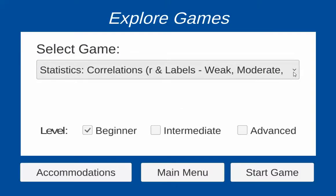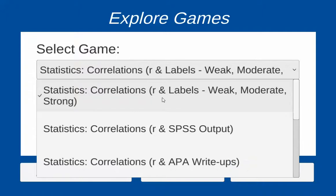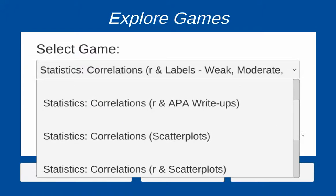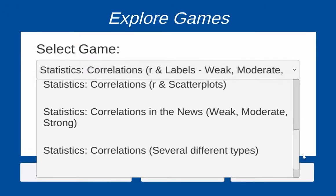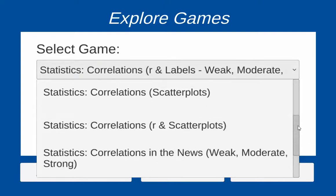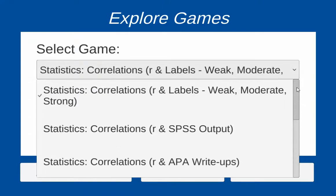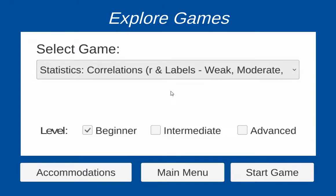There are several different games that can help you become more familiar with correlations: those that look at Pearson's R, as well as labels weak, moderate, and strong, looking at SPSS output, APA style write-ups, scatter plots, comparing scatter plots with scatter plots, as well as seeing correlations reported in the news.